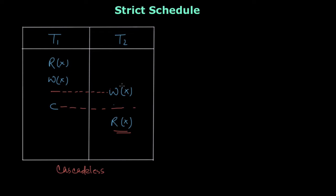But this is not a strict schedule. A strict schedule is even more strict than cascadeless. It says no operation is allowed — the rule is that a transaction neither can perform read nor write before T1 is committed. According to strict schedule, T2 cannot perform read or write before T1 is committed, while in cascadeless T2 can perform a write operation.